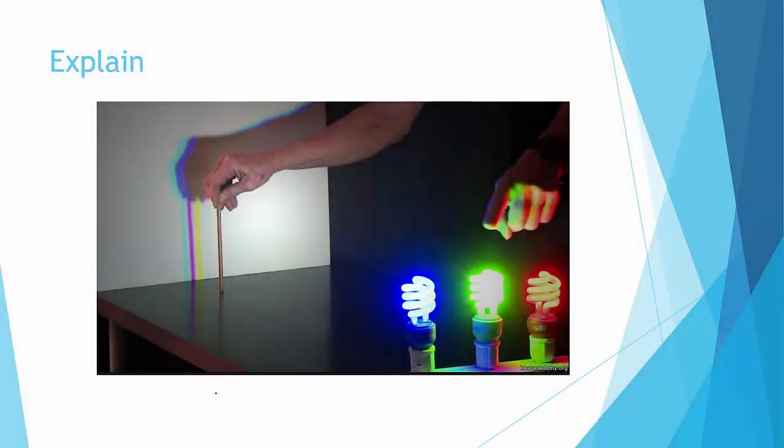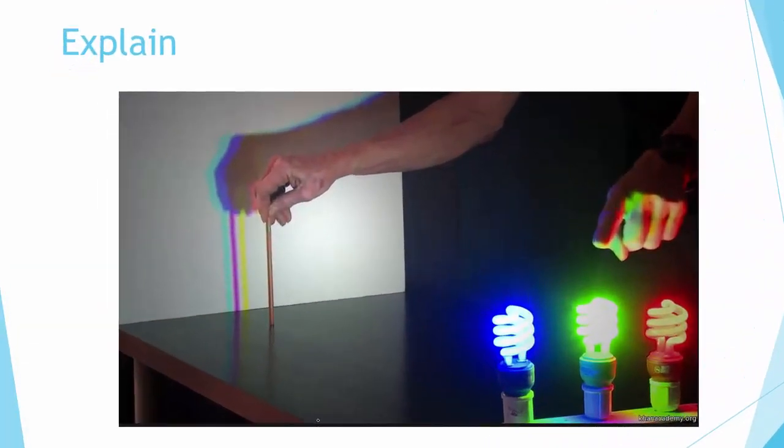In this lesson we will explain why under blue, green, and red light you see these three shadows, and you don't see any blue, green, or red light on the screen over here. This is a simplified diagram of the setup. You have the blue, green, and red lights, and the pencil is right at the center here, and this black line represents the screen.